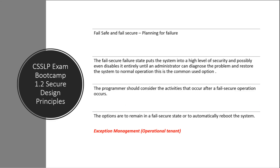Fail secure basically means that if there is a failure, it puts the system into a high level of security and can even disable it. This is a big deal from an application standpoint when it comes to transaction processing. The program really needs to consider activities that will happen after that fail secure operation occurs.